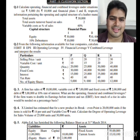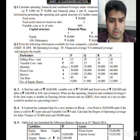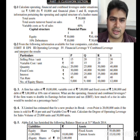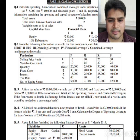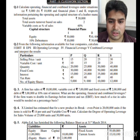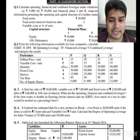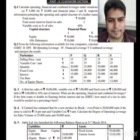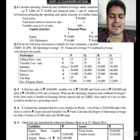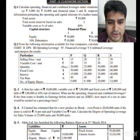To solve this question, we need EBIT, EPS, OL, FL, and CL. First, we prepare an income statement: selling price minus variable cost gives contribution per unit, multiplied by number of units gives total contribution. From total contribution, subtract fixed cost to get EBIT, subtract interest to get EBT, subtract tax to get NPAT, and divide NPAT by number of equity shares to get EPS.